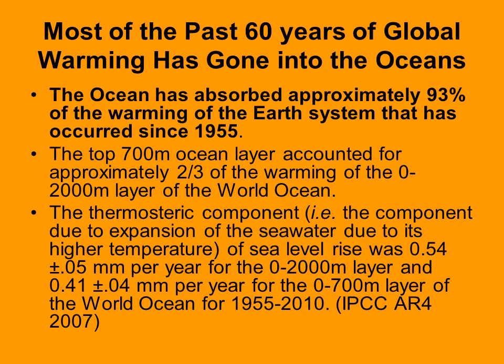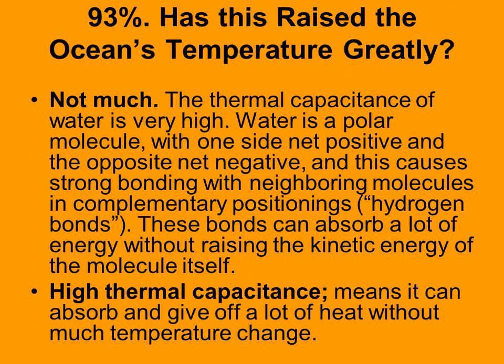Here's an important fact: almost all of the heating that we have generated through global warming has gone into the oceans — 93% has gone into oceans. Most of that, two-thirds, is in the top 700 meters, and the remainder is mostly in the next 1300 meters down below. Has it raised the ocean temperature very much? No, it really hasn't.